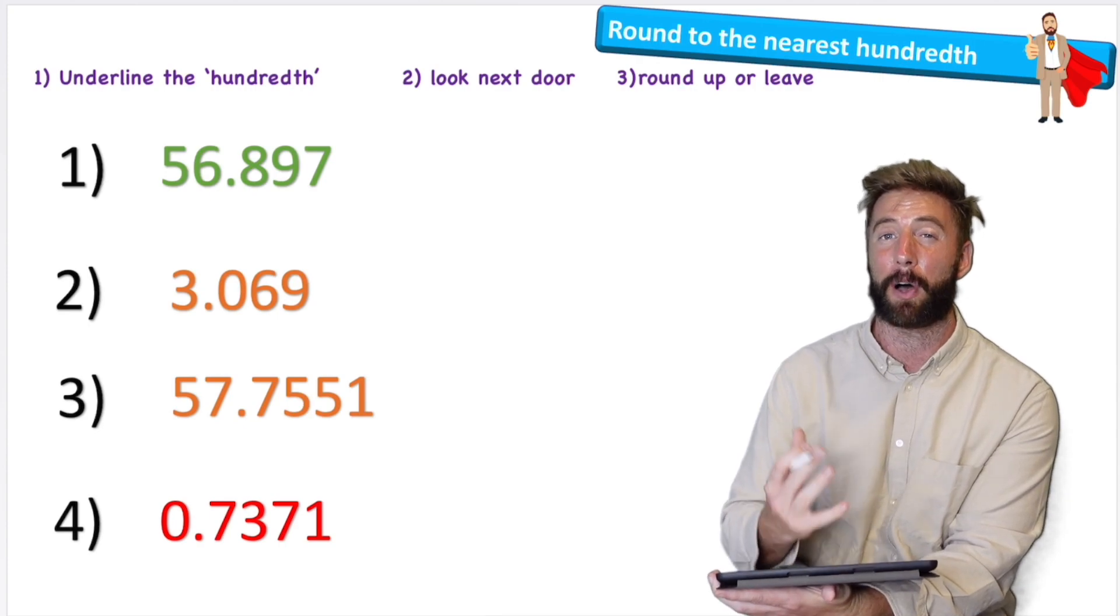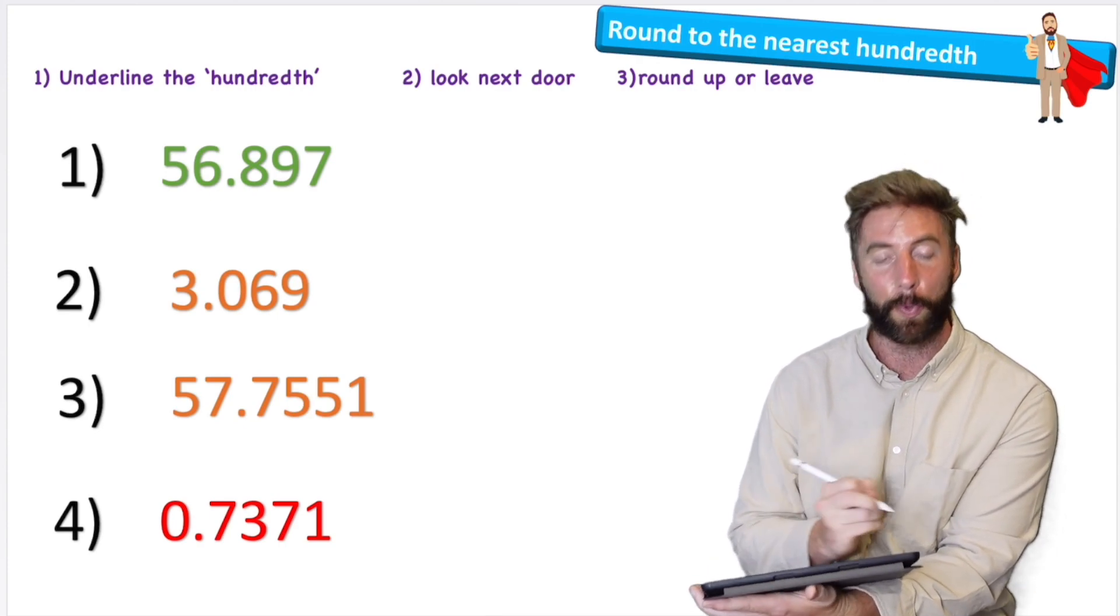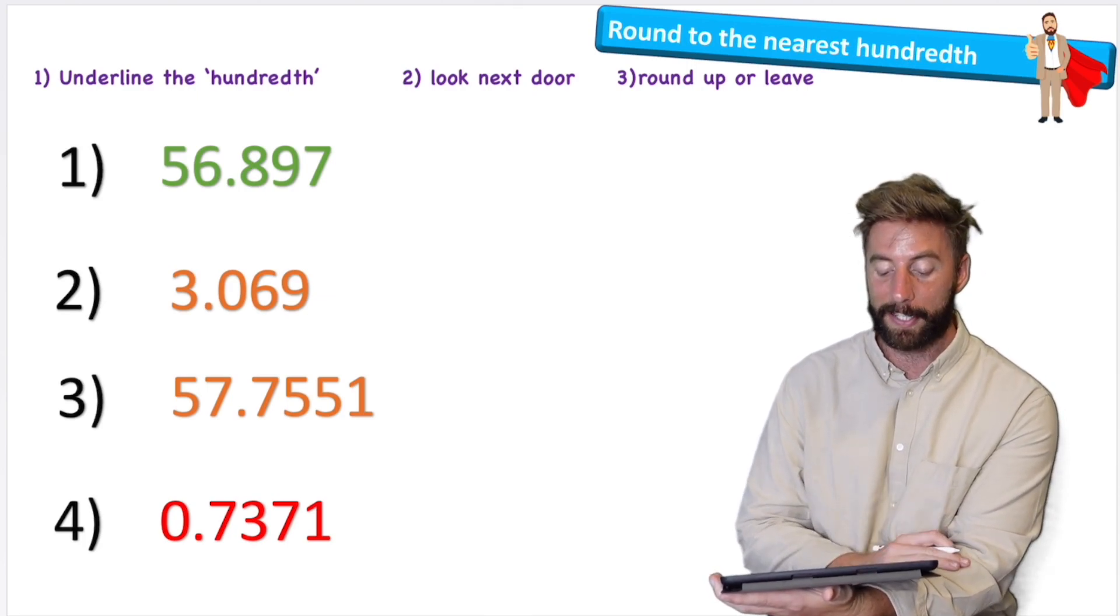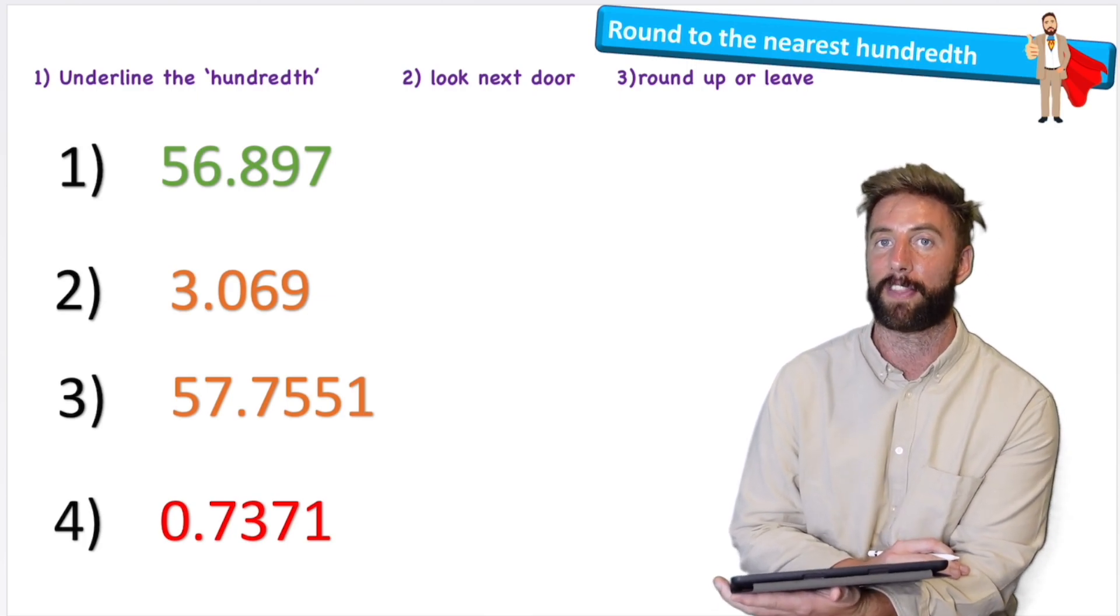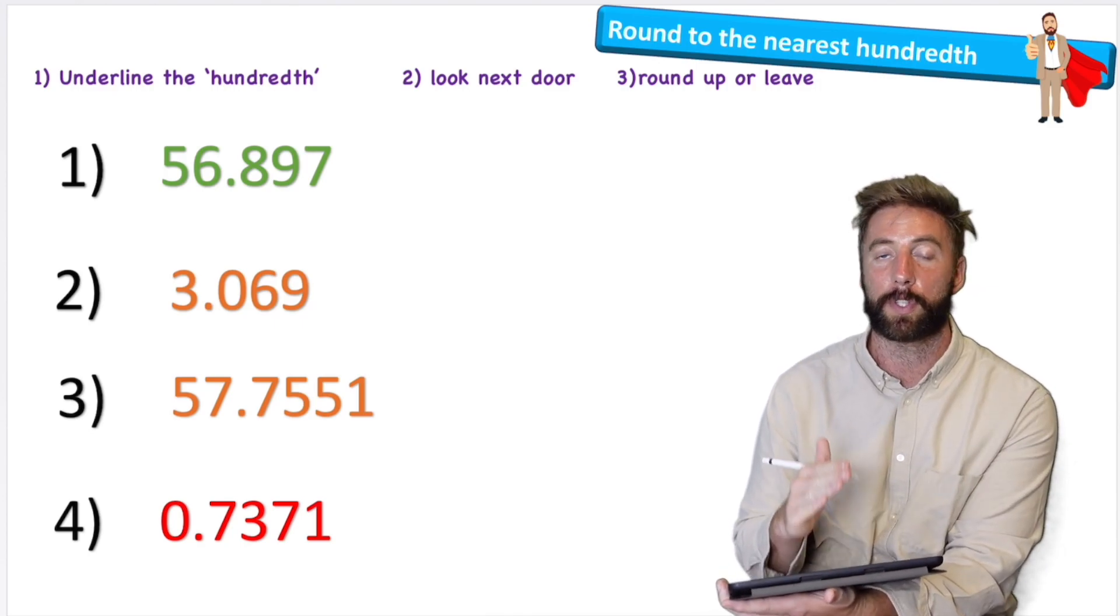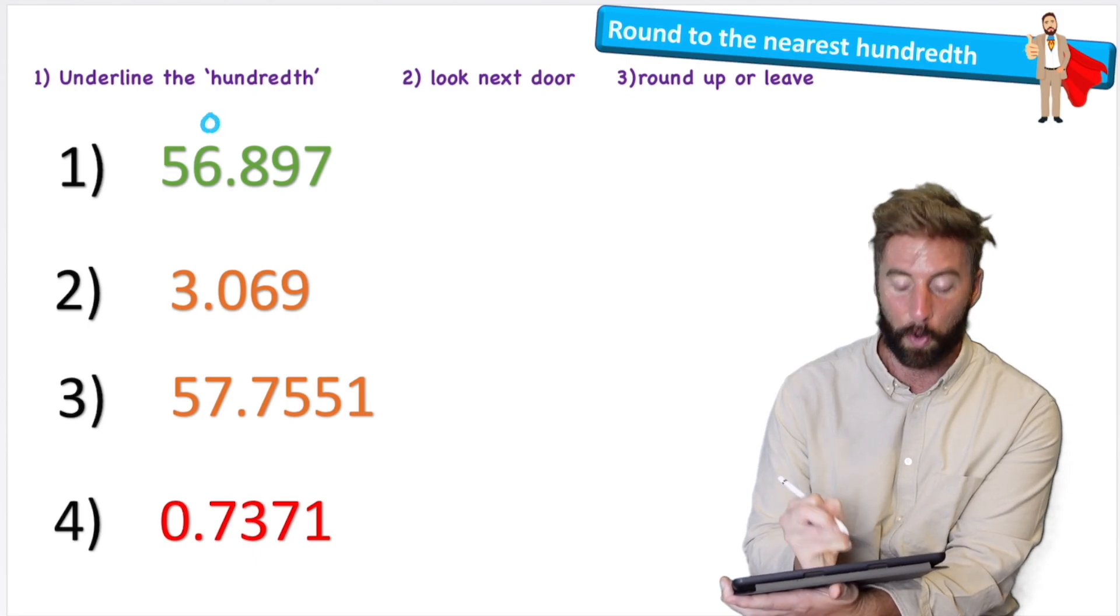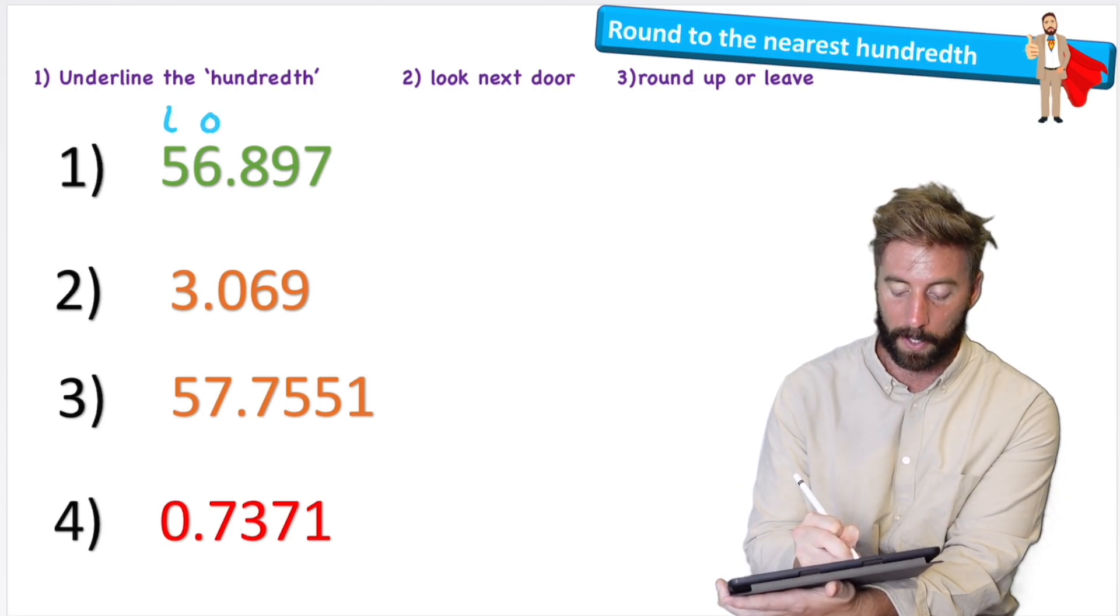So if we just take this first example, we have 56.897 or 56 and 897 thousandths. Let's just put some labels on the top of these numbers so we know which column is which. The six, this will be our ones column. Hopefully we know that this is our tens.